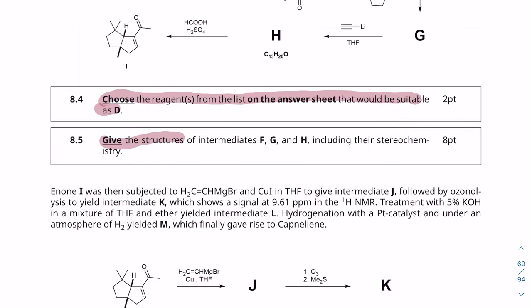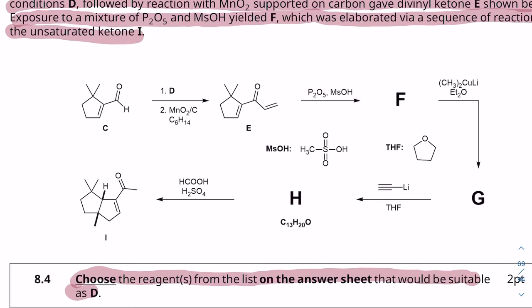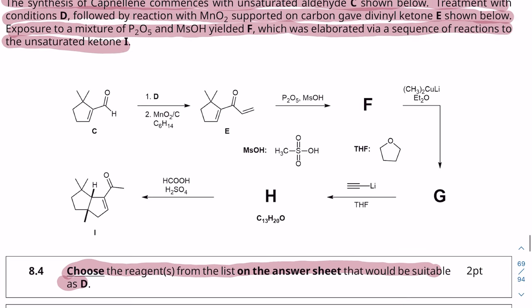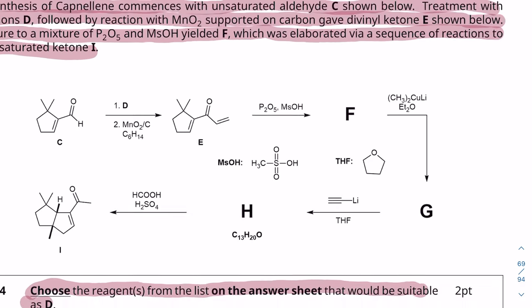Next up, give the structure of intermediates F, G, and H, including their stereochemistry. So I'm just going to draw it in here, but the participants actually had to draw it in the answer sheet. I'm just going to draw it here so that we have everything available. So from E to F, we're going to have the acid and the P2O5 is just going to act to remove water from the reaction mixture. So what's going to happen here? Well, actually it's the Nazarov reaction.